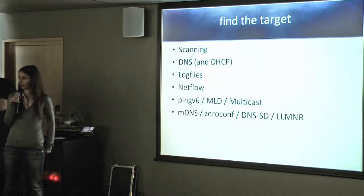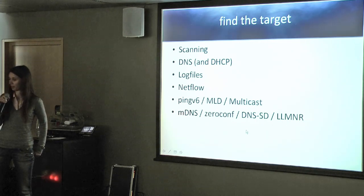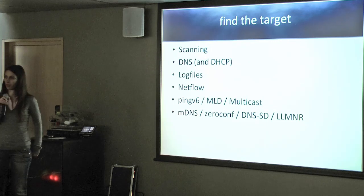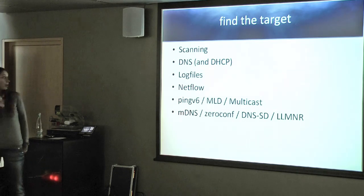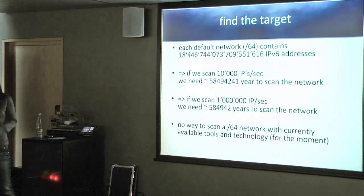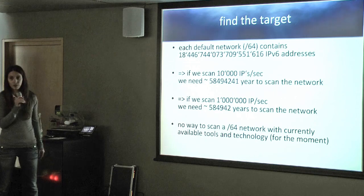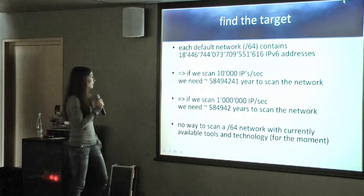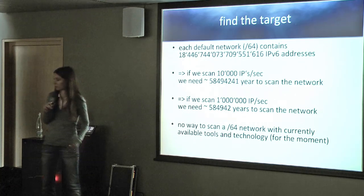The main problem is finding the target. We can do scanning, but given the size of IPv6 address space, it is a lot. Alternatively, we can use DNS, DHCP, log files, or NetFlow — which is very useful. Other options include ping, MLD, multicast, or multicast DNS. If we scan only a /64, we have an enormous number of IP addresses to scan, which could take an astronomical number of years. So we need to find another way.